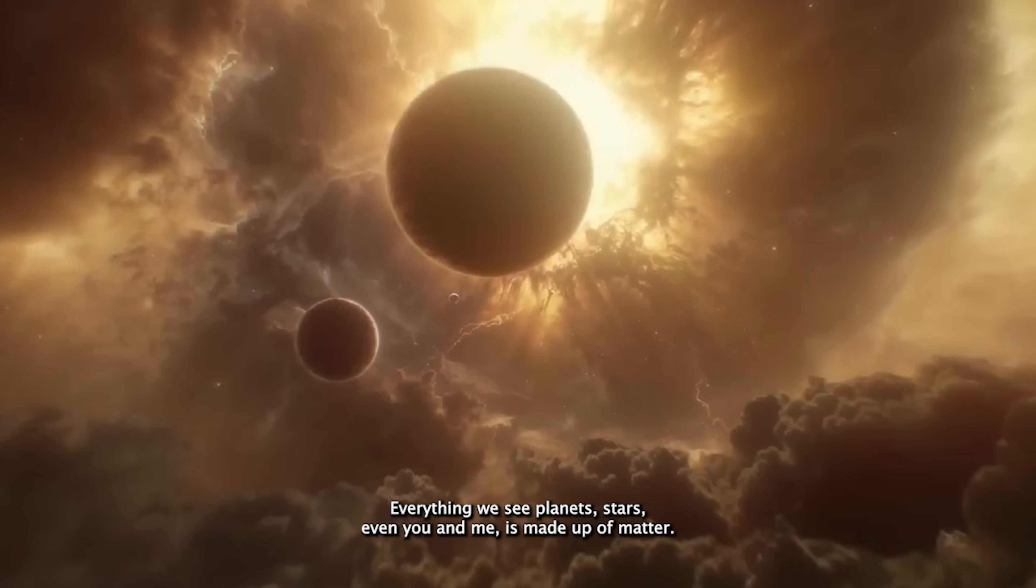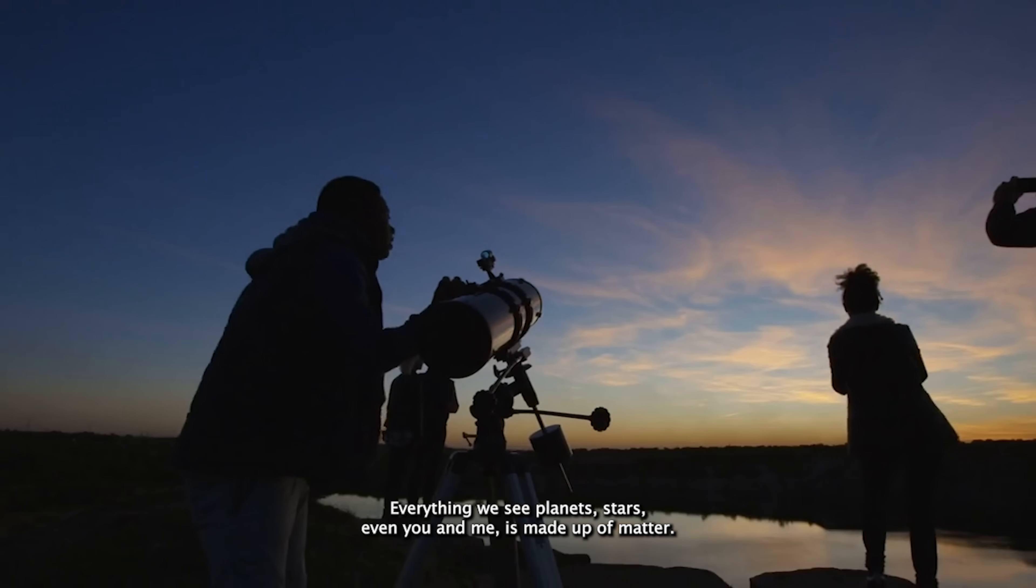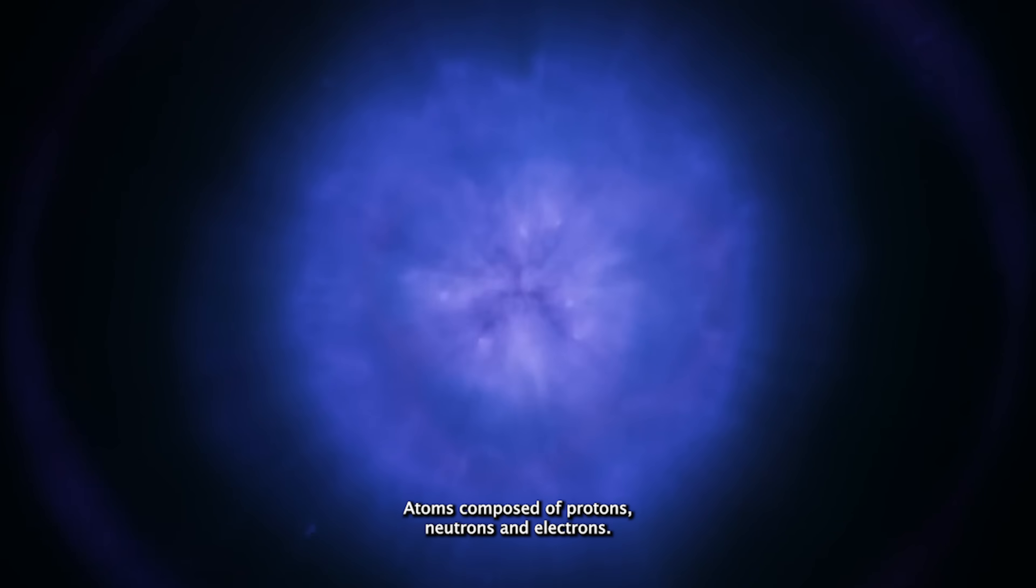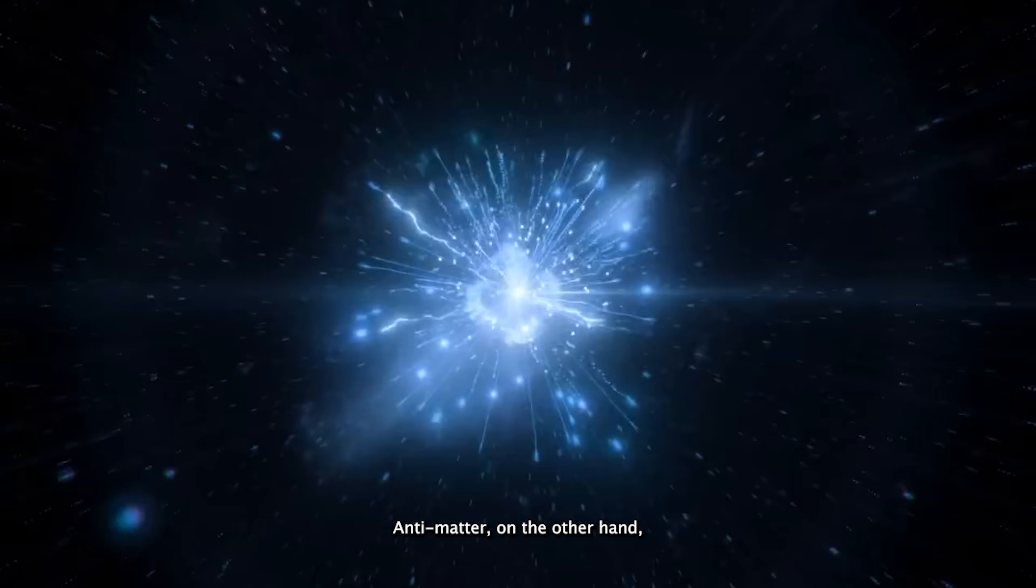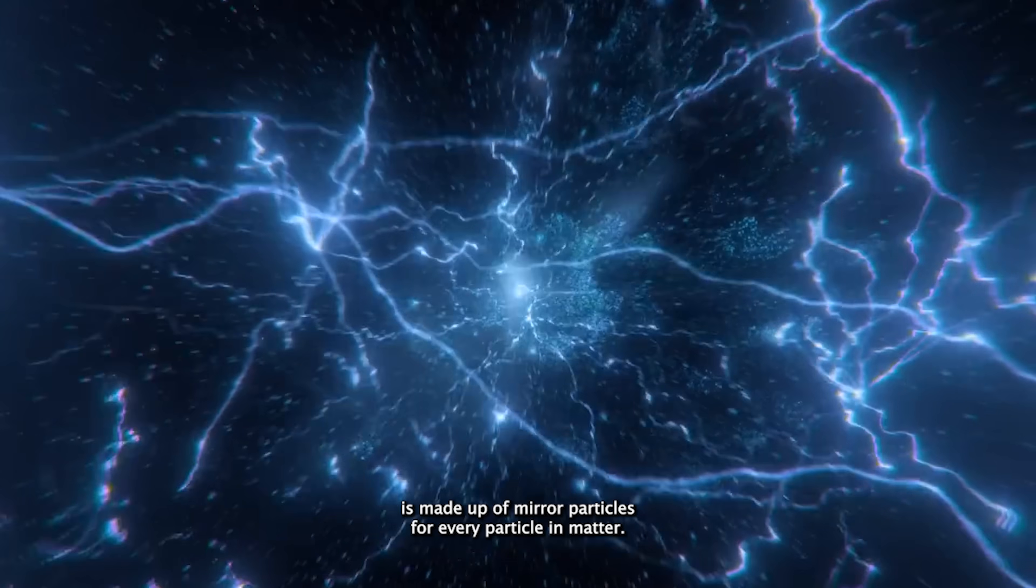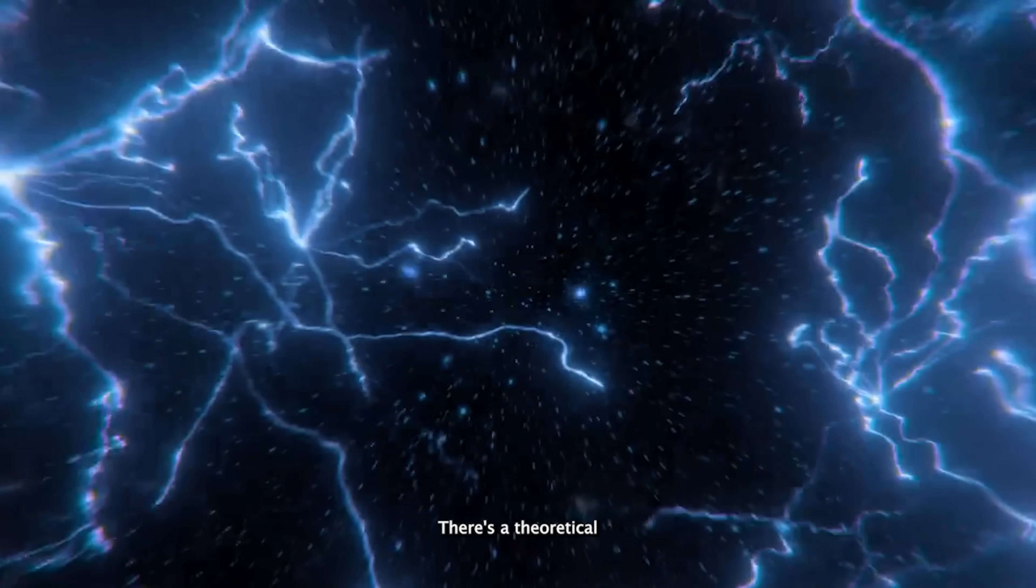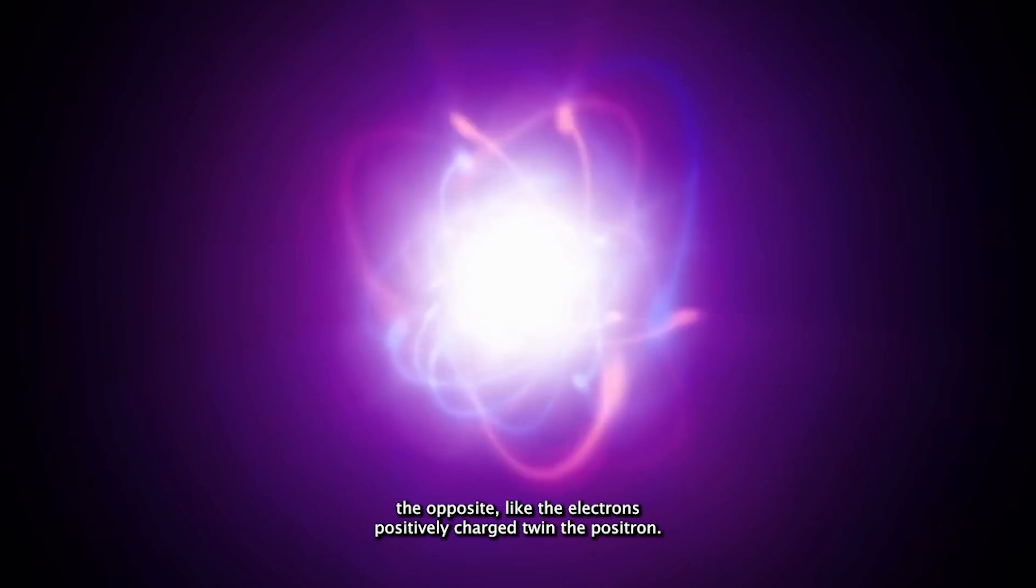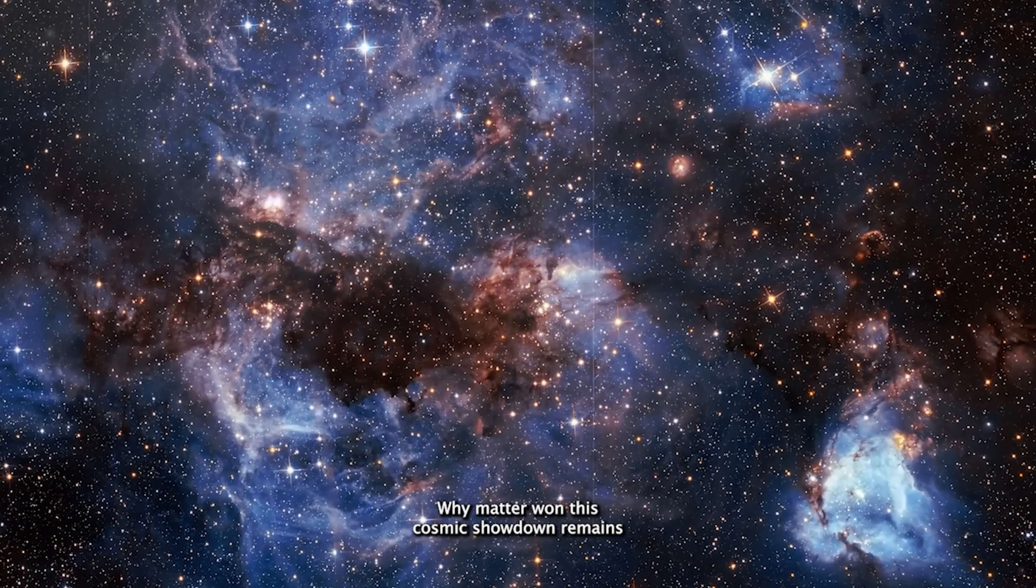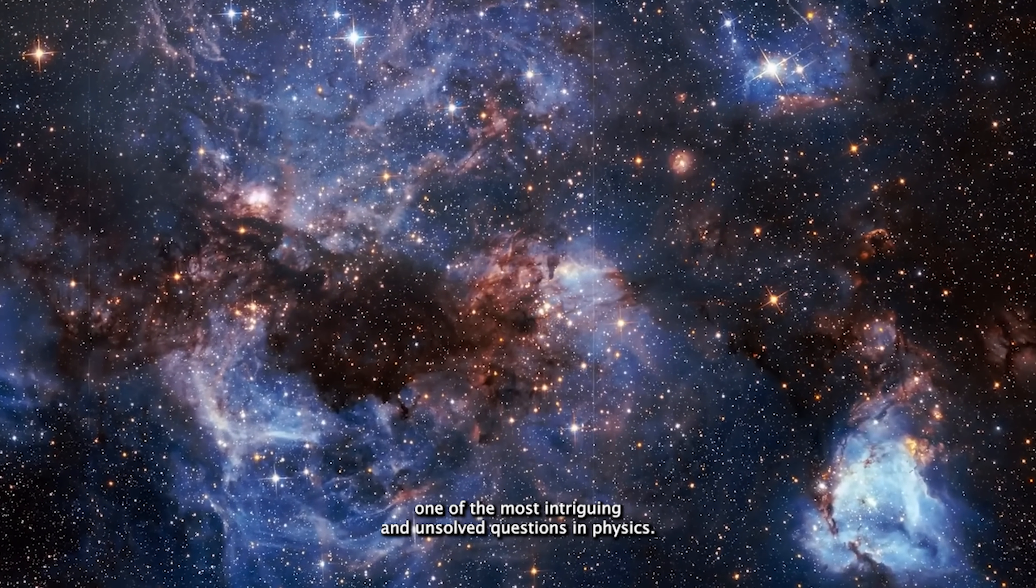Everything we see—planets, stars, even you and me—is made up of matter. Atoms composed of protons, neutrons, and electrons. Antimatter, on the other hand, is made up of mirror particles. For every particle in matter, there's a theoretical opposite, like the electron's positively charged twin, the positron. Why matter won this cosmic showdown remains one of the most intriguing and unsolved questions in physics.